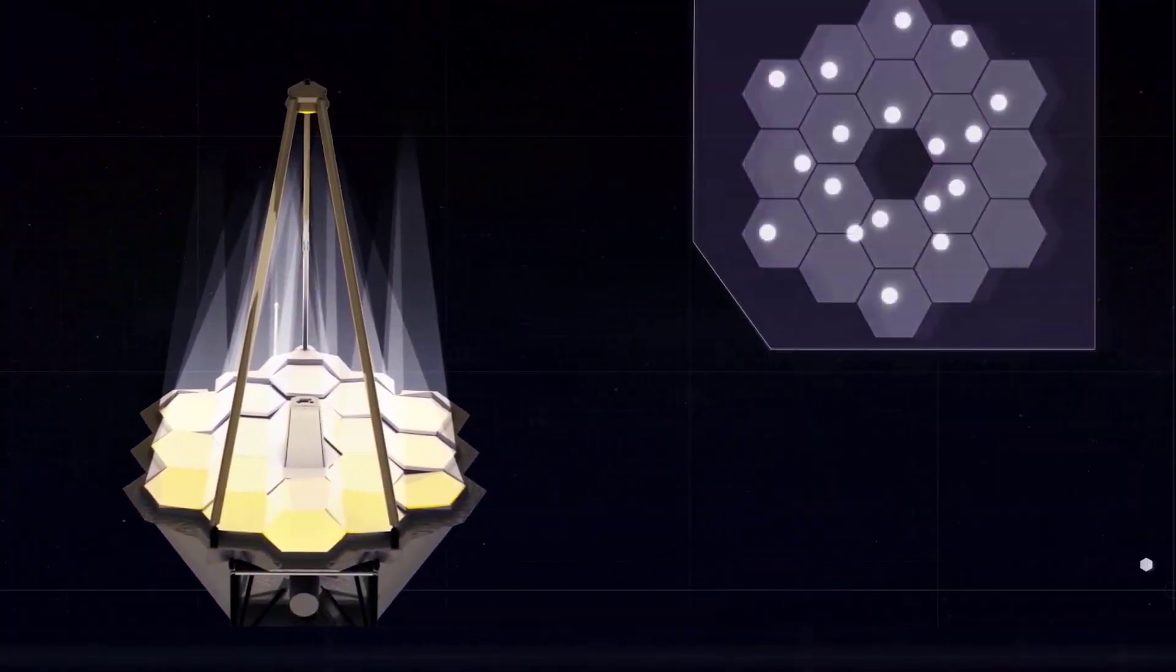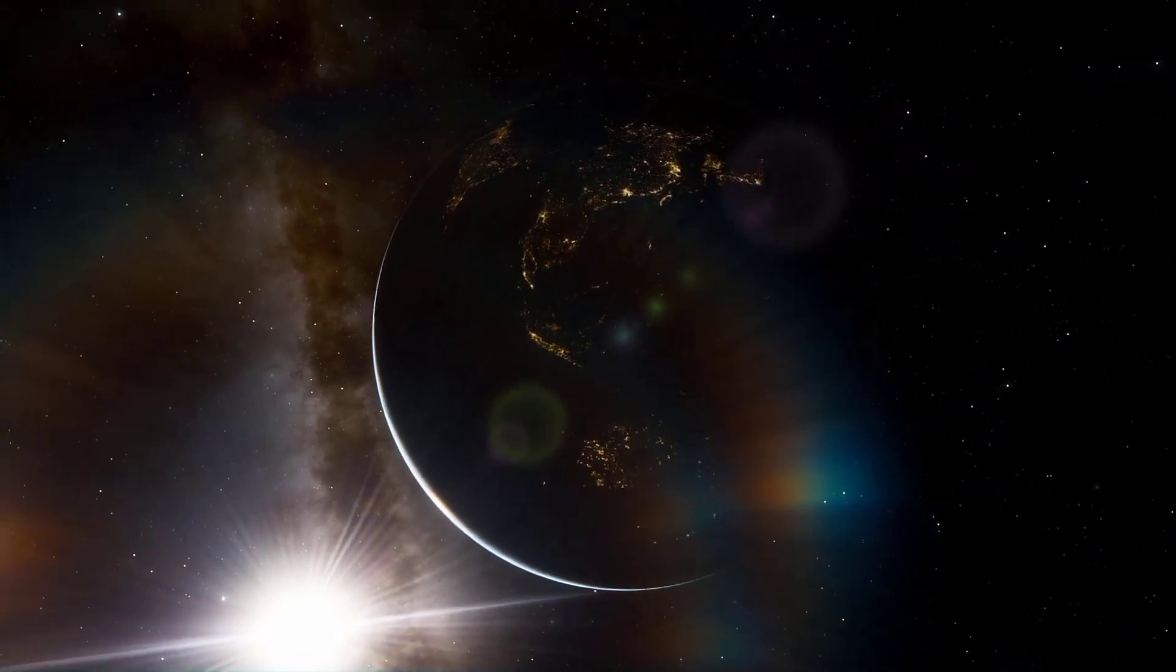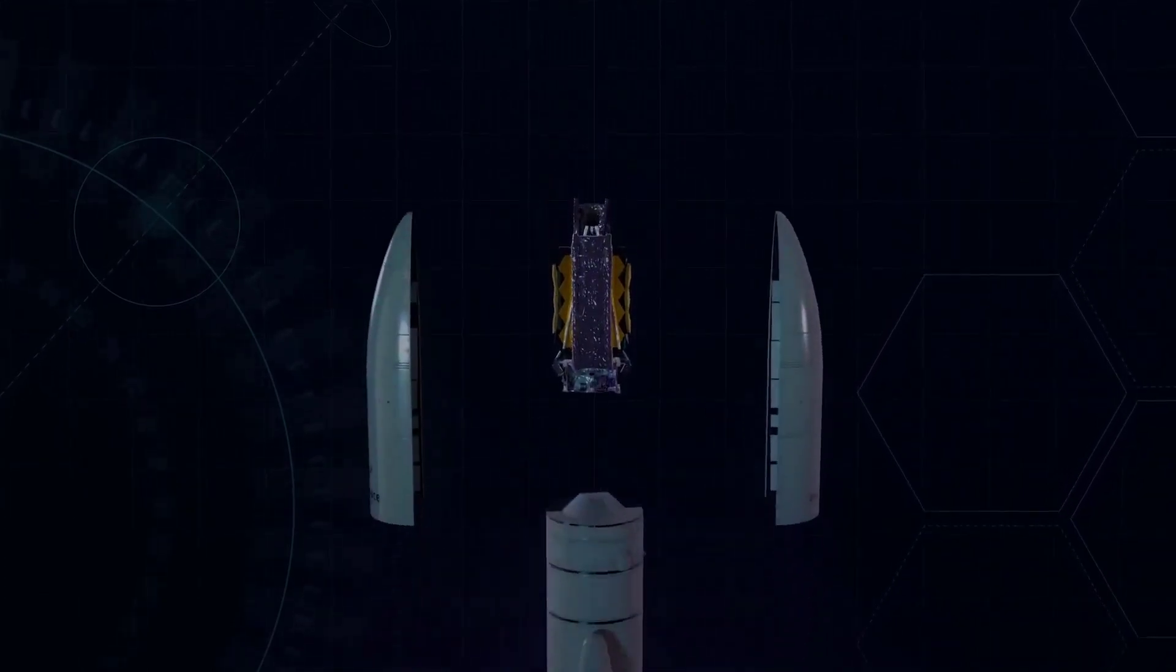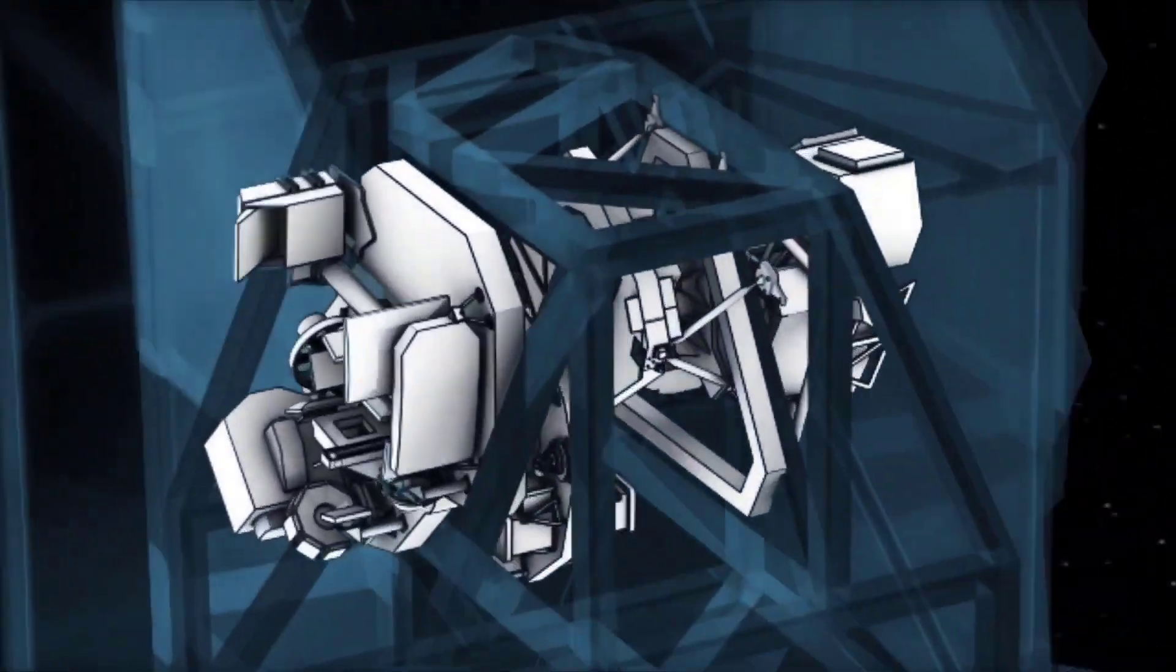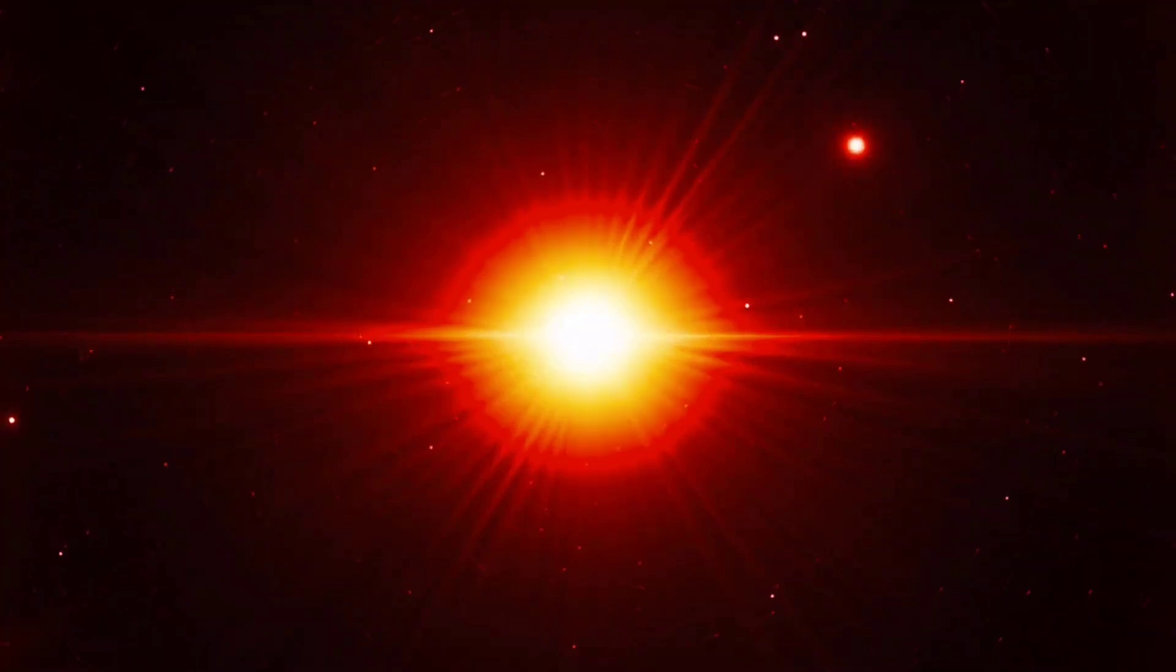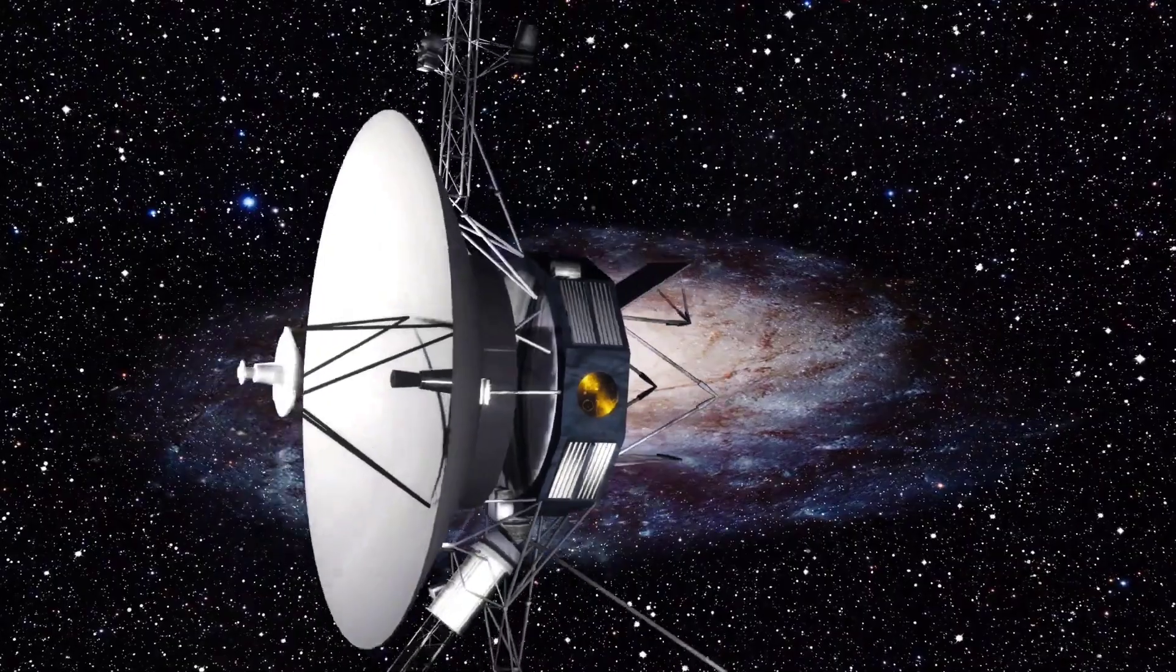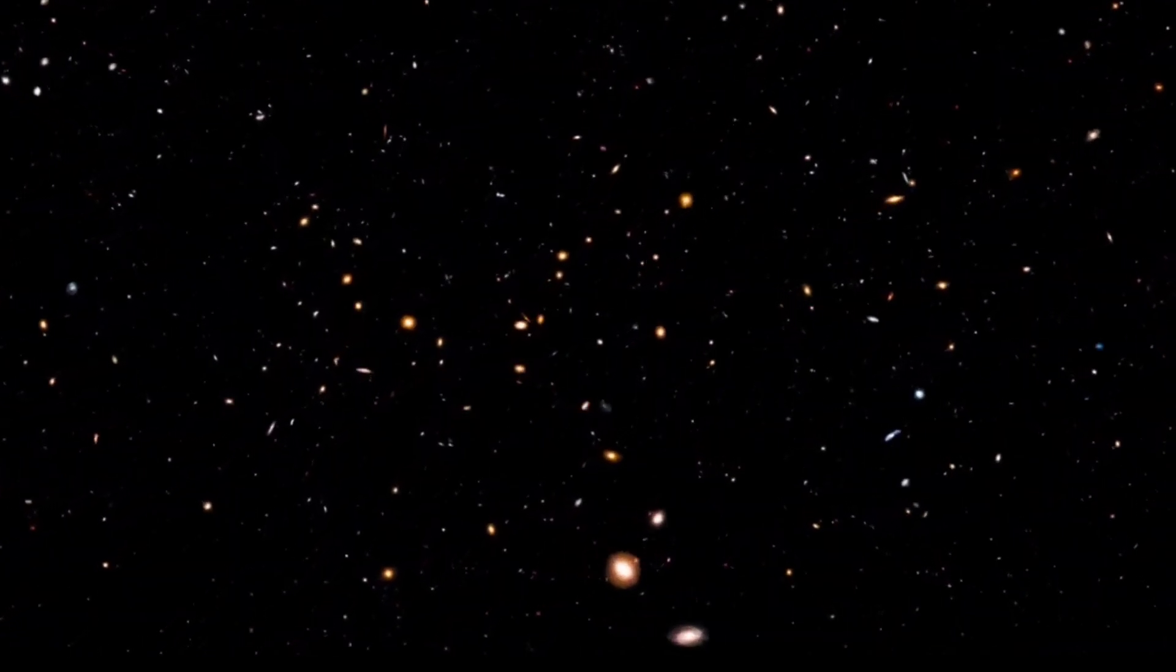What Webb has in store for the study of exoplanets is only hinted at by the exceptionally precise spectrum, which was created by simultaneously processing 280 distinct spectra taken during the observation. During the next year, scientists will employ spectroscopy to examine the surfaces and atmospheres of several dozen extrasolar planets. These planets range in composition from small rocky worlds to giants that are rich in gas and ice. This NEARIS observation reveals that Webb can characterize the atmospheres of exoplanets in precise detail, including the atmospheres of possibly habitable worlds.